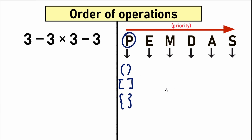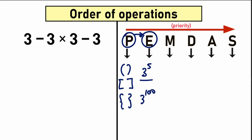So the first step: you should scan your expression in terms of parentheses. Where do you have parentheses? Do you have any at all? When you don't have parentheses, you can easily go to the next step. The next step after parentheses is to find exponents — E stands for exponent, which in simple words means powers. For example, 3 to the power 5, we need to raise this 3 to the power 5. We're talking about basic powers like 3 squared or 3 cubed.